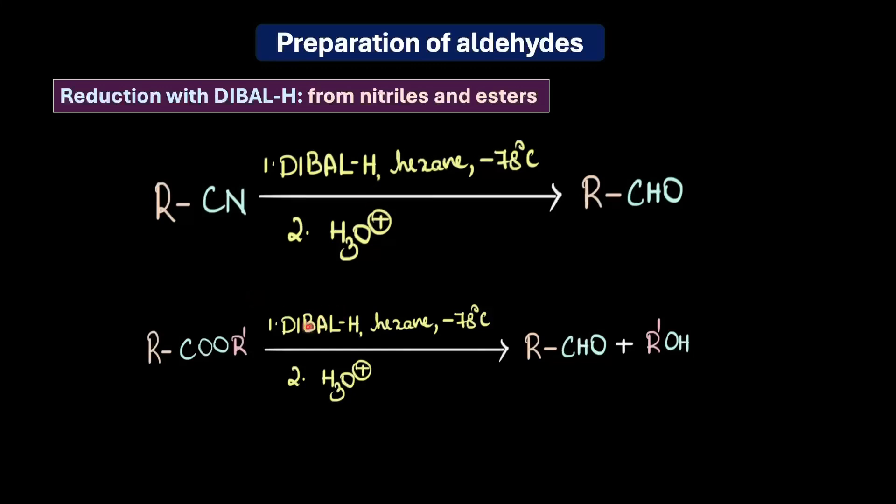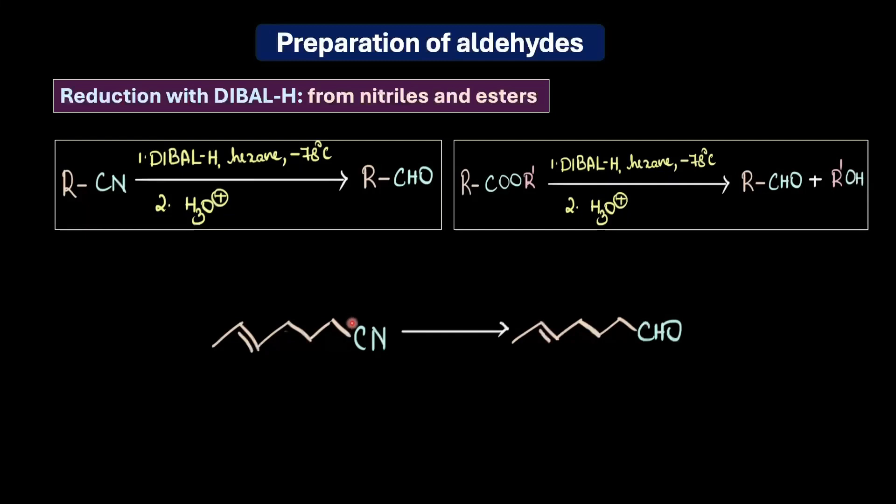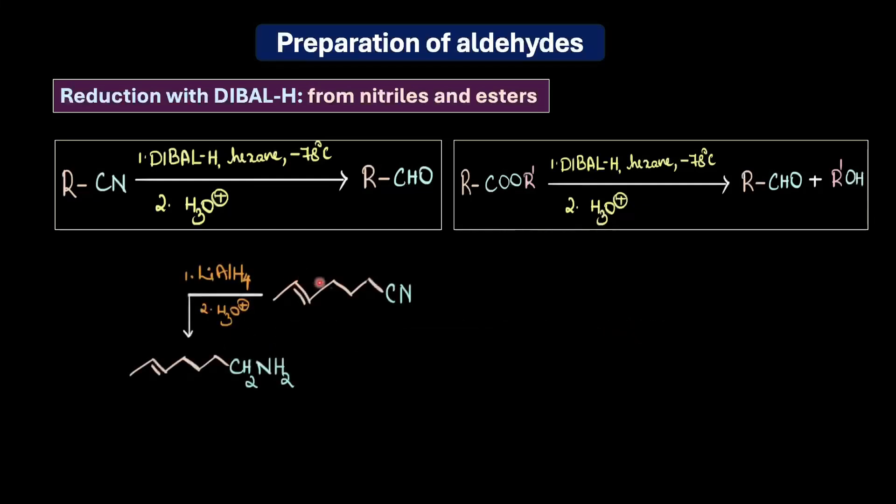For example, when reducing a molecule that contains both a nitrile group and a double bond, other reducing agents can give you unwanted products or a completely different product. Let's see what products we would get with different reducing agents here. If we treated this starting substrate with lithium aluminum hydride, it would reduce the CN to a primary amine. It doesn't affect the double bond but it certainly reduces the nitrile to a primary amine.